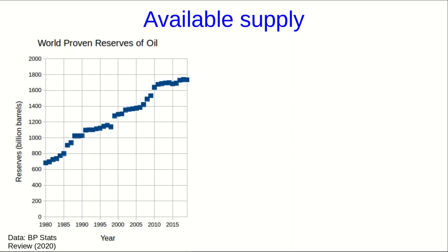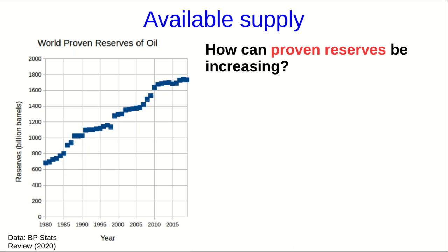We're going to start by looking at this graph of world-proven reserves of oil over the last 40 years or so. What may immediately be occurring to you as a question, if you're not used to thinking about this, is: how can the proven reserves be increasing? After all, we are consuming oil. It might be even more puzzling if you happen to know that most of the major reserves of oil were discovered by the 1960s, and more recent discoveries have been comparatively small. So how on earth can the proven reserves be increasing?